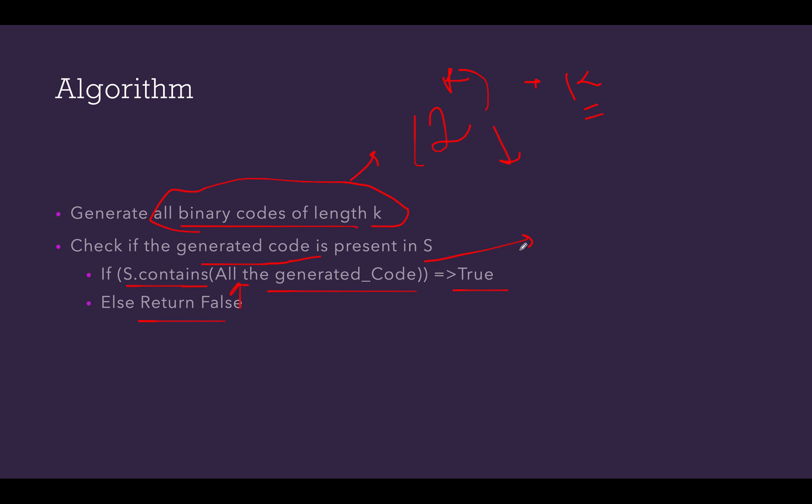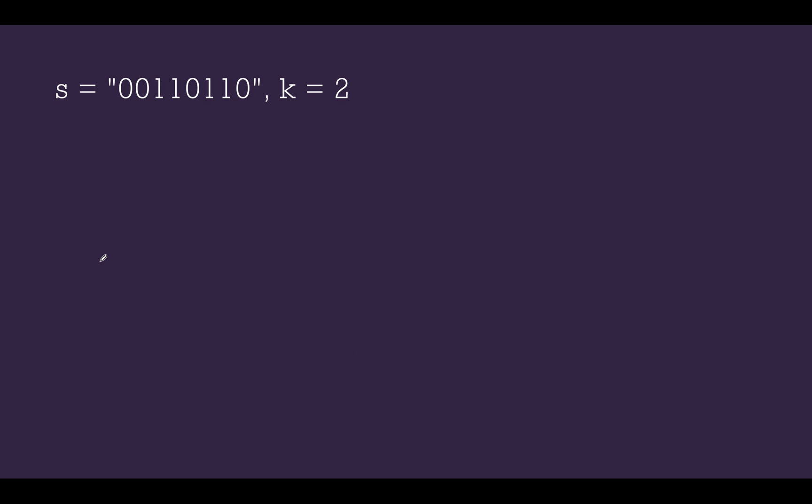We need to do the traversal every time we are checking the generated code. So s.contains method has time complexity of order of n where n is the length of s. So the total time complexity would become n into 2 raised to power k which is quite high. Can we do something better than this? Yes.